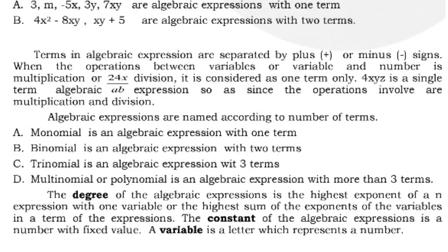For example, 4xyz (4 times x times y times z) is a single term, as is 24x/(a·b), since the operations involved are multiplication and division. Algebraic expressions are named according to the number of terms: a monomial has one term, a binomial has two terms, a trinomial has three terms, and a multinomial or polynomial has more than three terms — four terms and up.